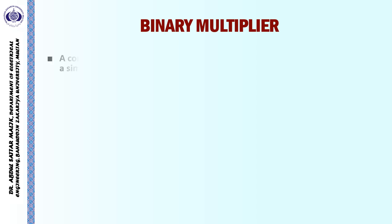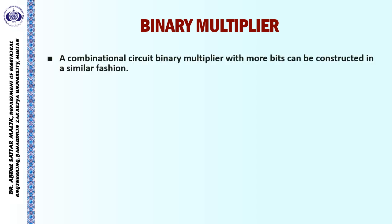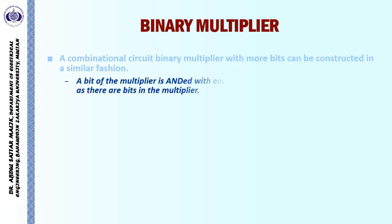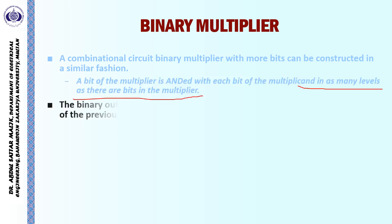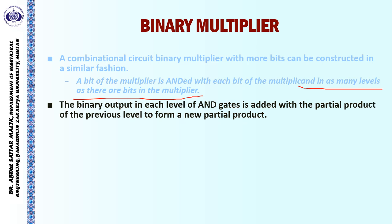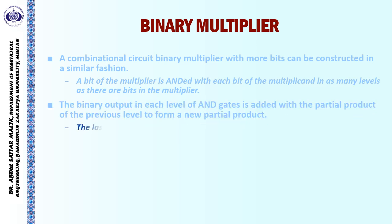To extend this concept, a binary multiplier with more bits can be constructed in a similar fashion. Each bit of the multiplier is ANDed with each bit of the multiplicand B across as many levels as there are bits in the multiplier. The binary output in each level of AND gates is added with the partial product of the previous level to form a new partial product. The last level produces the final product.